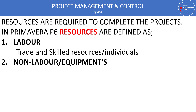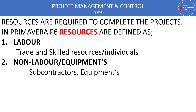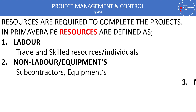The second type of resource in Primavera P6 is non-labor or equipment resources. These are equipment from suppliers or any company equipment required for the project. The third type is materials, which are consumable materials required to complete the project — in construction this may be quantities of concrete, steel, fixing blocks, or similar items assigned to activities.